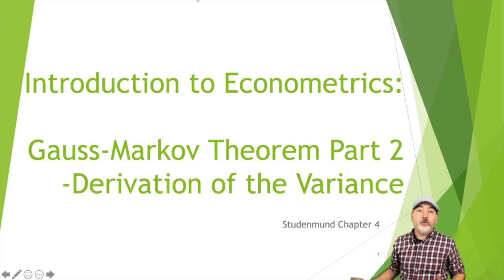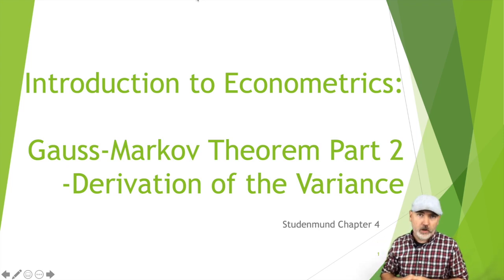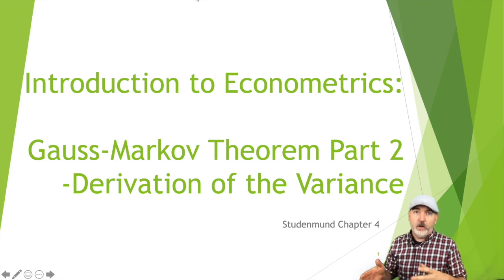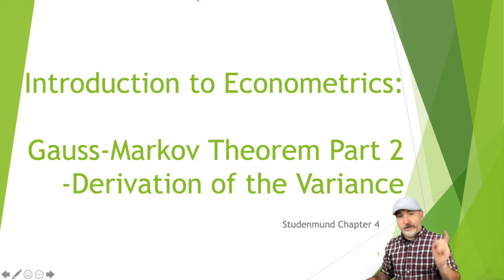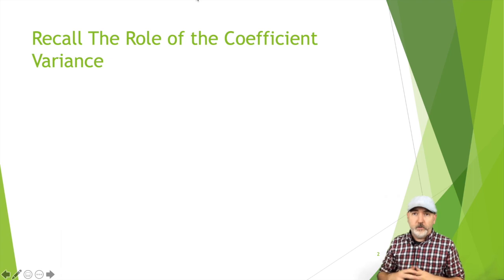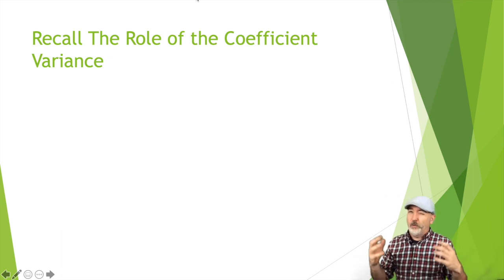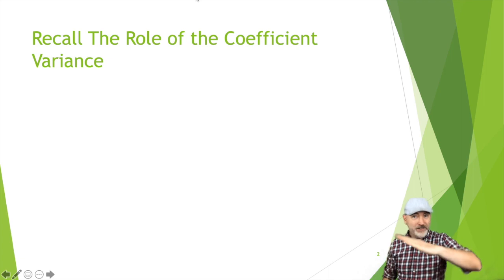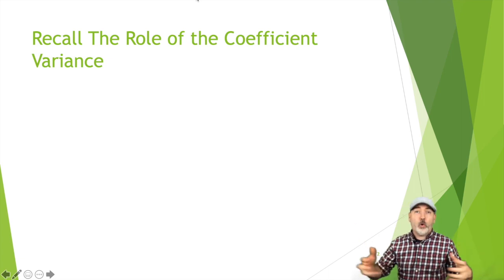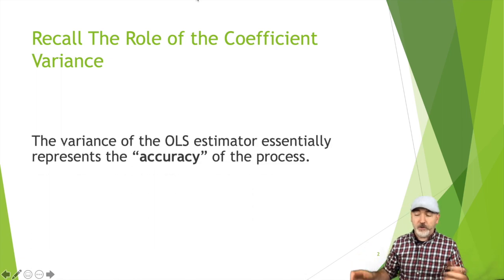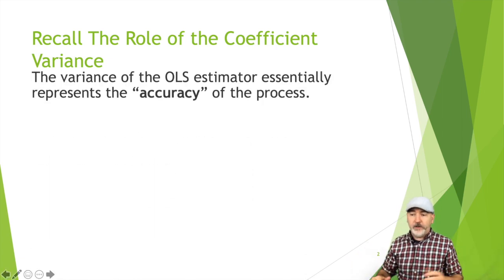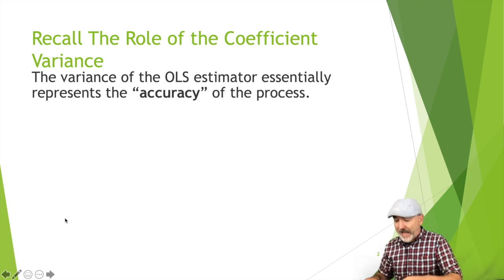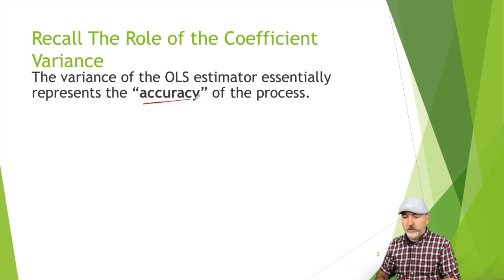We're going to do part two of the Gauss-Markov theorem discussion, jumping into our variance of the B1 hat OLS estimator. By reminding ourselves why this is important: when we talk about the variance of our B1 hat, we're measuring how much dispersion and variability there is in the position of that best fit line across repeated samples. We want to think about this as measuring the accuracy of our estimator.